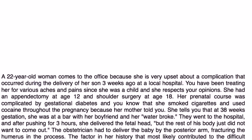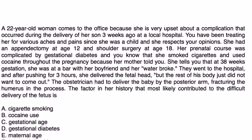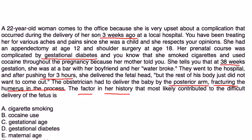Now for some clinical vignettes. A 22-year-old woman comes to the office upset about a complication that occurred during the delivery of her son three weeks ago. Her prenatal course was complicated by gestational diabetes, and she smoked cigarettes and used cocaine during the pregnancy. At 38 weeks gestation, her water broke. After pushing for three hours, she delivered the fetal head, but the rest of the body would not come out. The obstetrician had to deliver the baby by the posterior arm, fracturing the humerus in the process. The factor in her history that most likely contributed to the difficult delivery is?